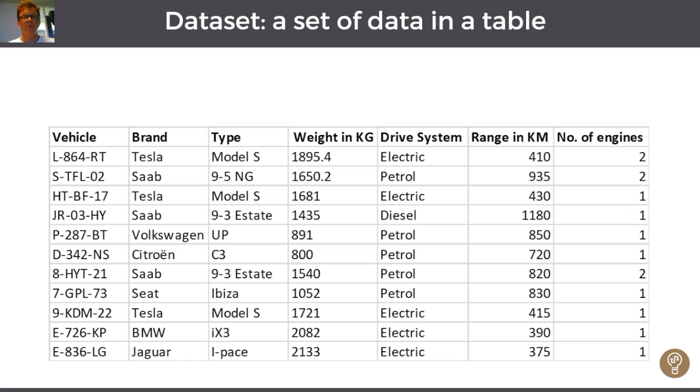In the last column there's counted data, or discrete data, because we've counted the number of engines in a vehicle, and it's a variable.